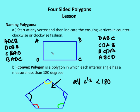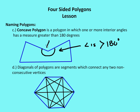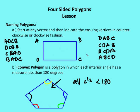A convex polygon is a polygon in which each interior angle has a measure of less than 180 degrees. I have convex polygons and concave polygons. In a concave polygon, think of this as a cave — there is an angle that is indented into the polygon, and that angle measure is going to be greater than 180 degrees. A concave polygon is one in which one or more interior angles has a measure greater than 180 degrees, while a convex polygon has no interior angles greater than 180 degrees.